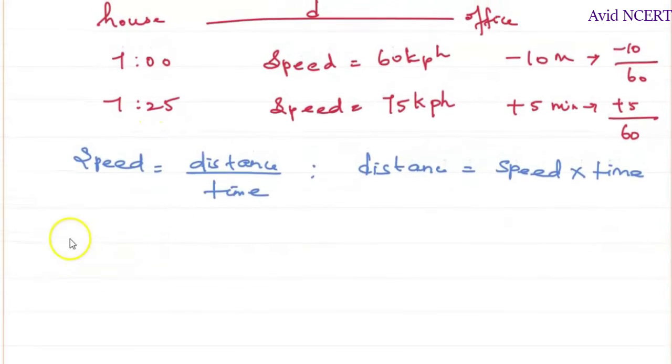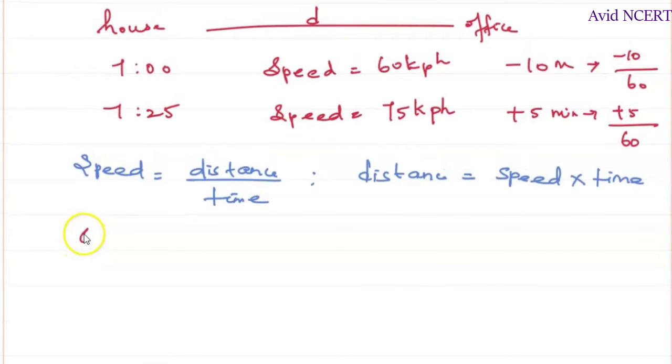So in the first case, which is speed 60 into time here is t minus 10 by 60. The arrival time minus 10 by 60 minus 7. So the time he has started from his house, since he has already started, it is minus 7.